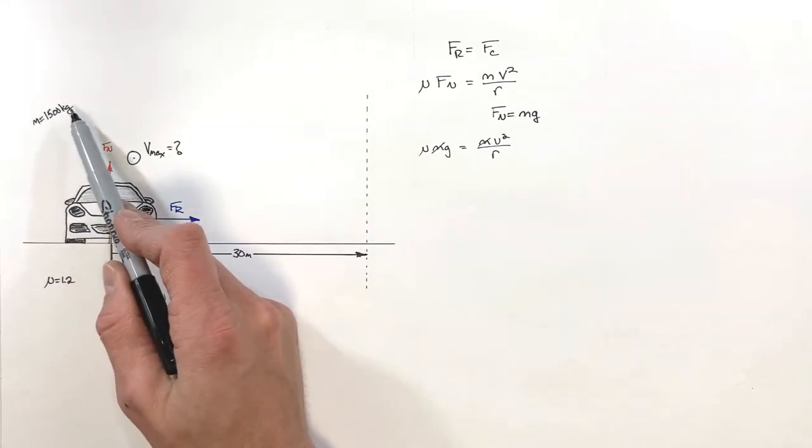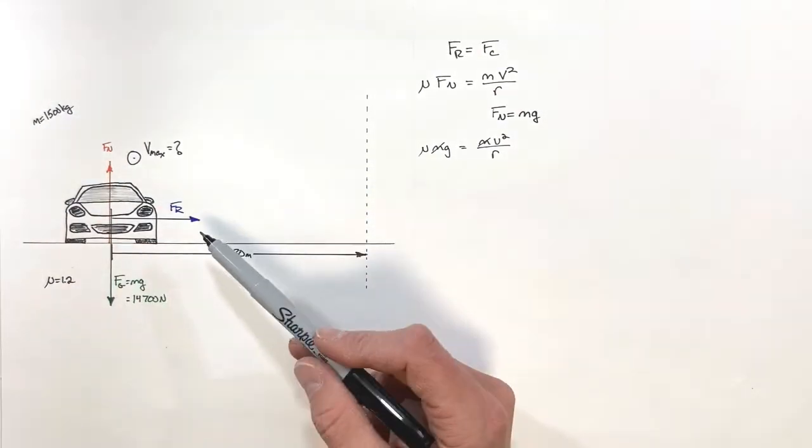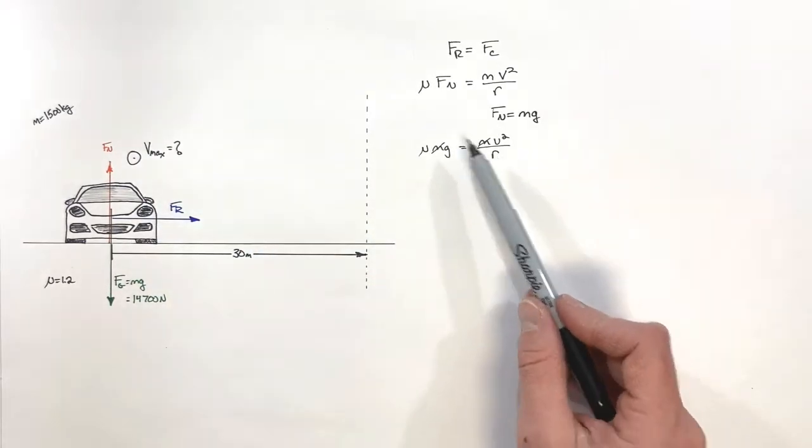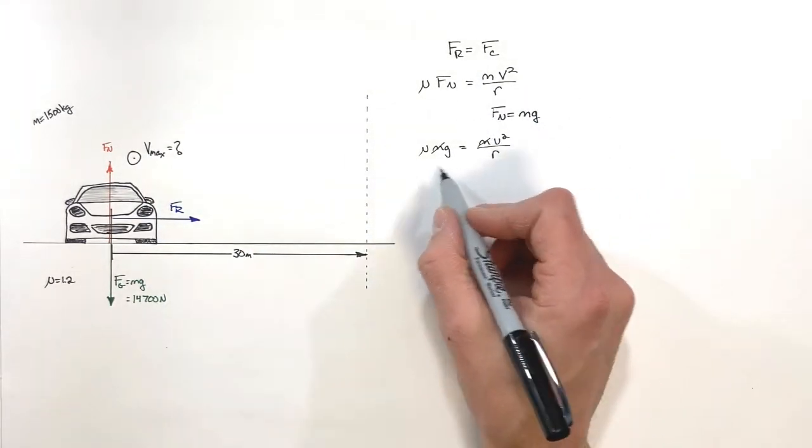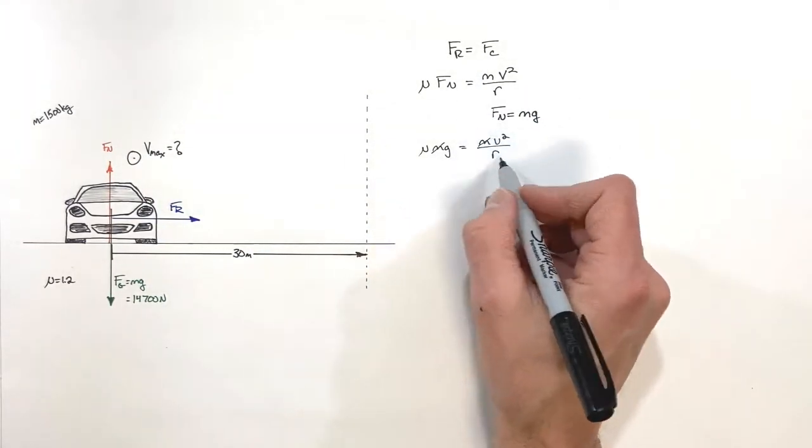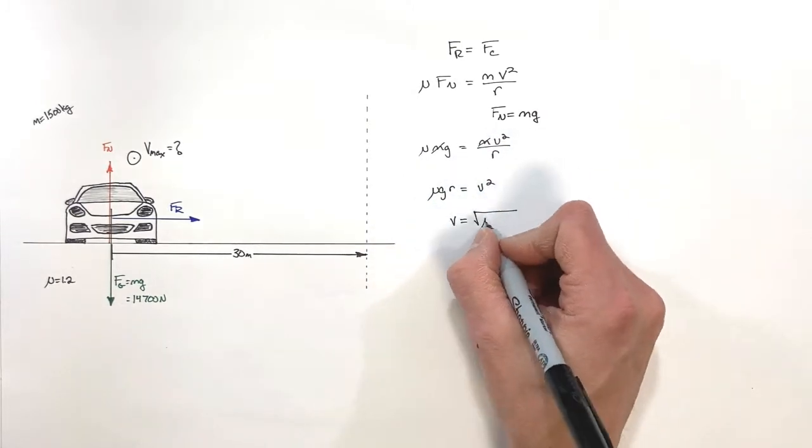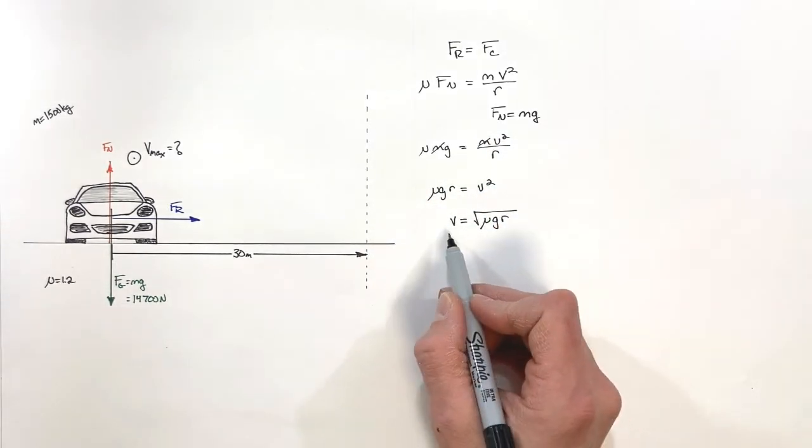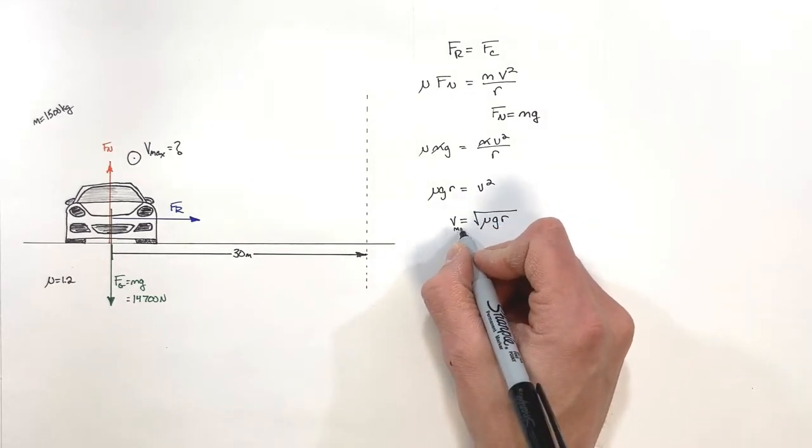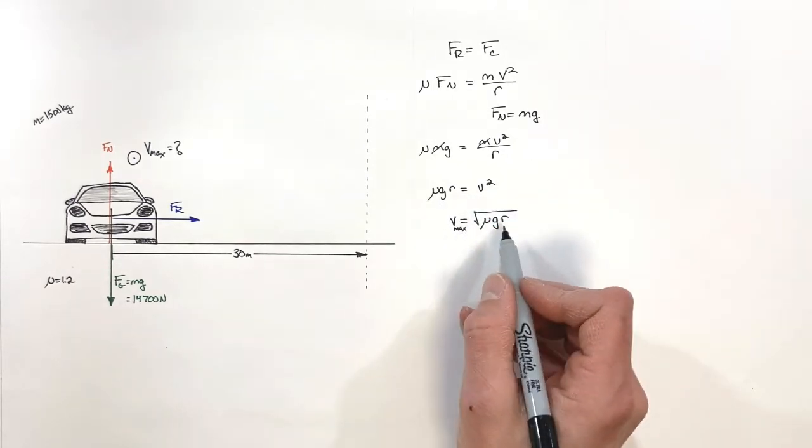Whether this was a 1500 kilogram car or a 2000 kilogram car or a 10,000 kilogram car, we're going to come up with the same result. And in doing a little bit of algebra, we come up with this equation for the velocity of the car. And this is what we're saying is the maximum possible velocity of the car.